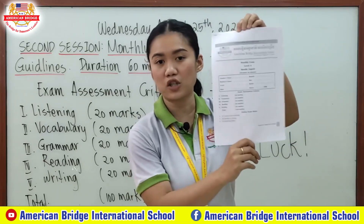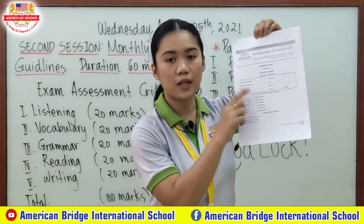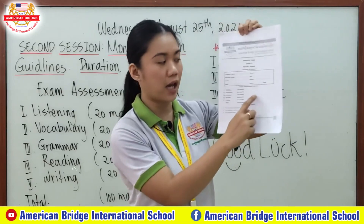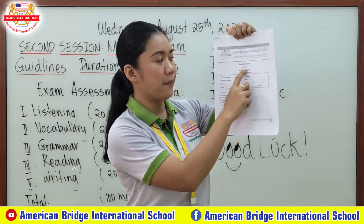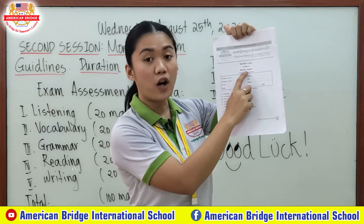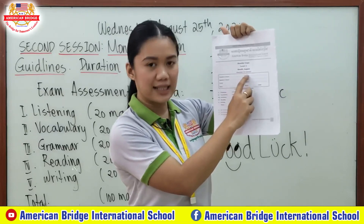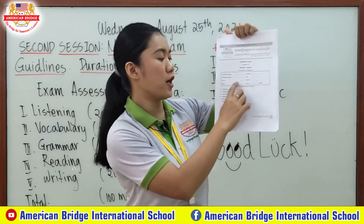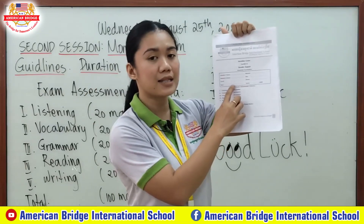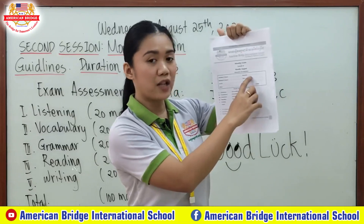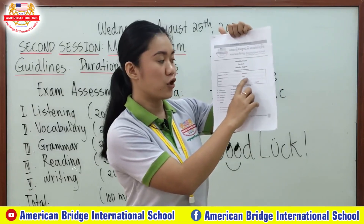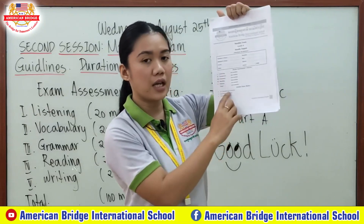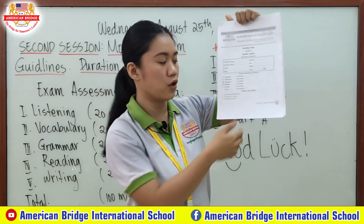This is your examination paper. Don't forget to complete each detail: monthly exam, level 6, August, duration 60 minutes. You have to write your teacher's name, your name, your level, what day it is today, the branch you come from, and your gender. Then review the assessment I have already given to you.